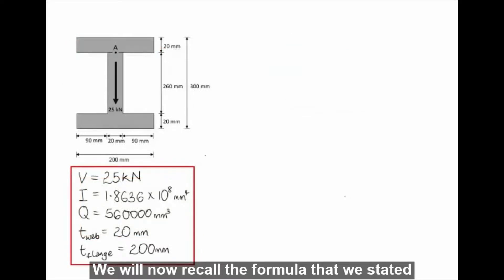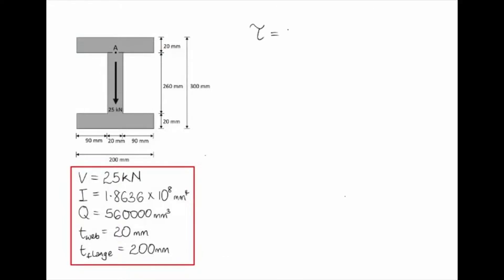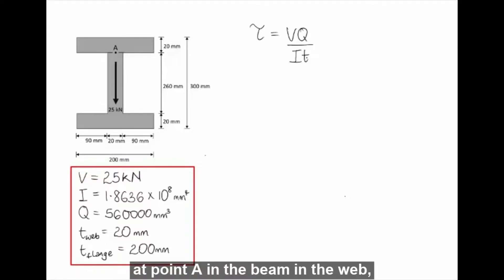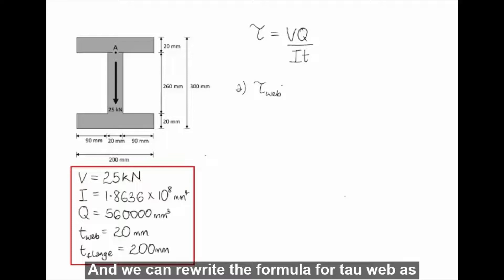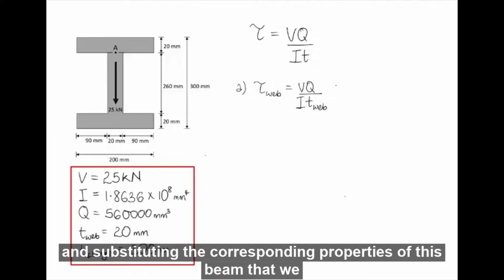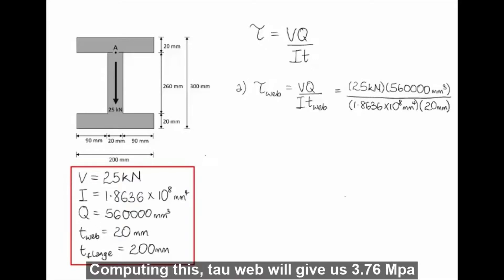Recalling the formula tau equals VQ over It, we first determine the shear stress at point A in the web, tau-web. Substituting the corresponding properties of this beam into the equation and computing, tau-web gives us 3.76 MPa.